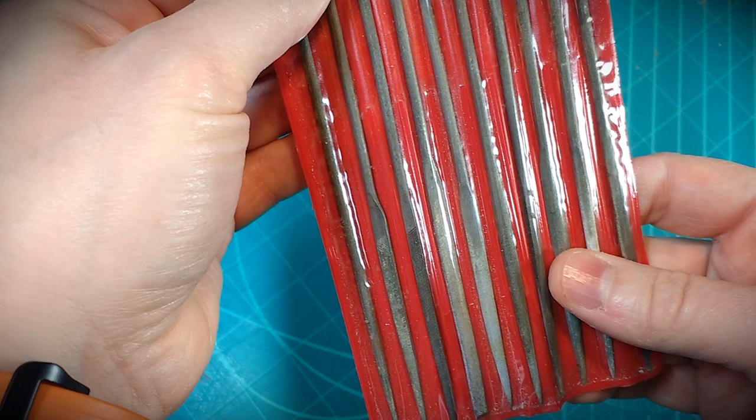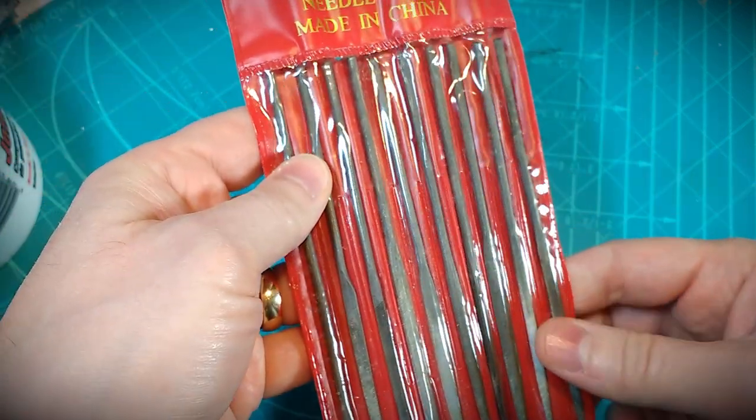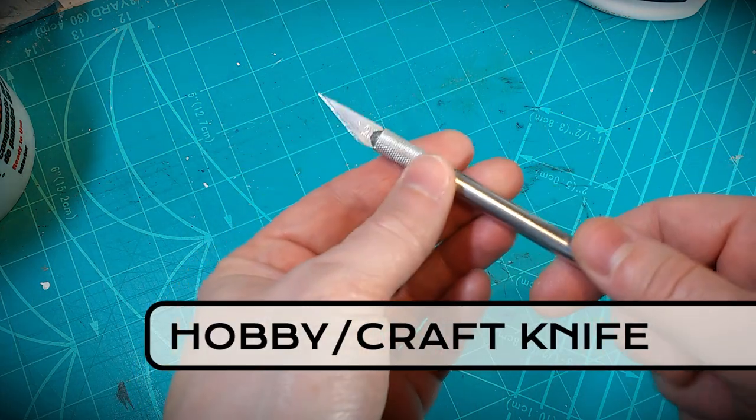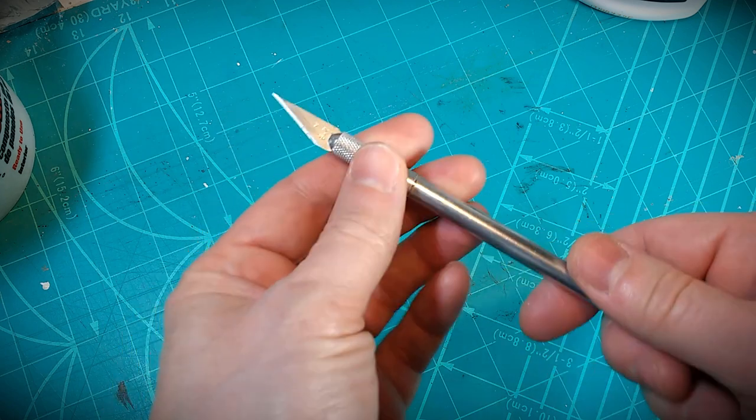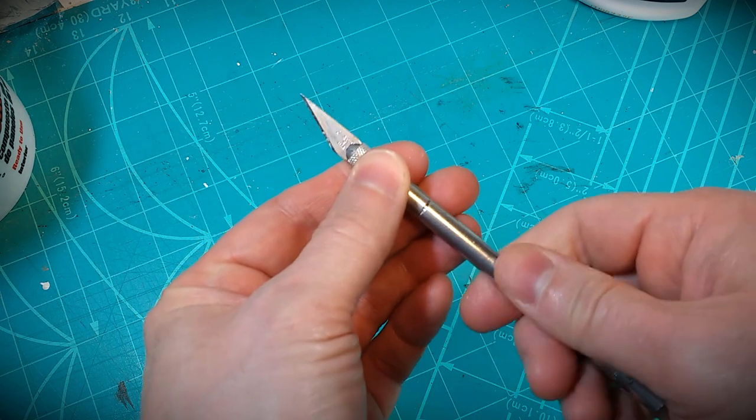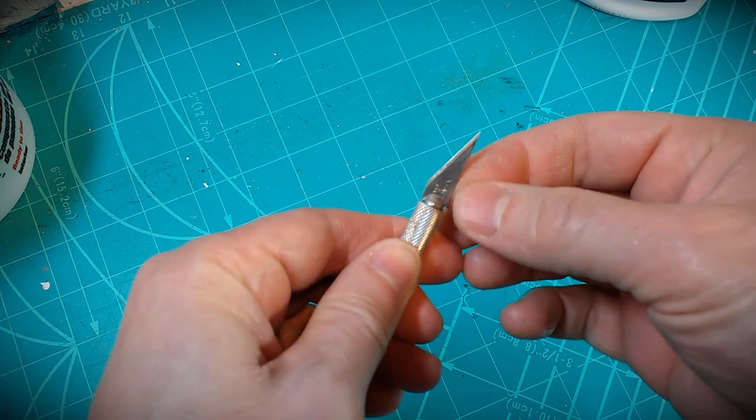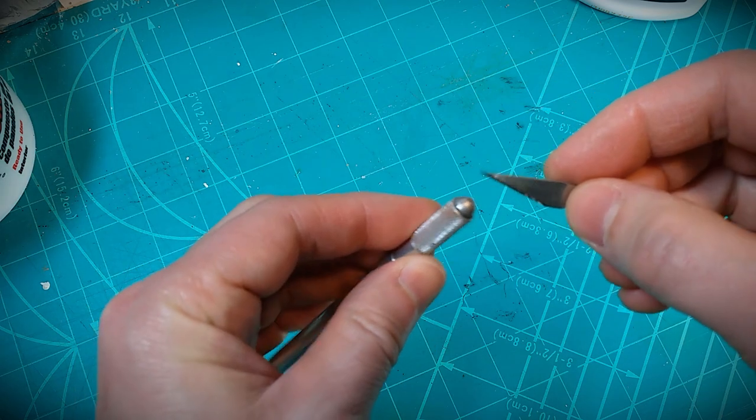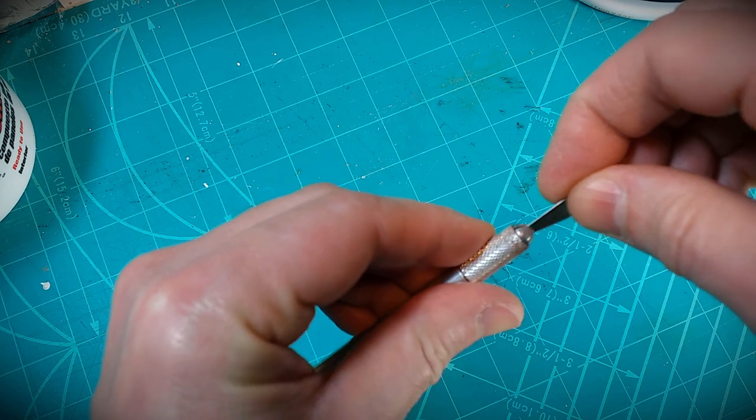The hobby craft knife, it's like an Exacto knife, and that's pretty much an essential tool. I use a number 11 blade for it. Having good sharp blades means less injury. Dull blades, you get a chance of being hurt more often.